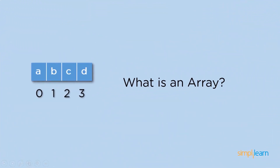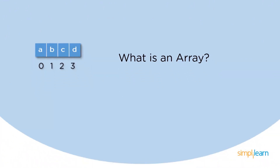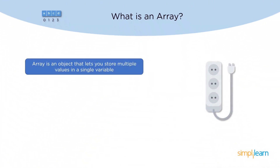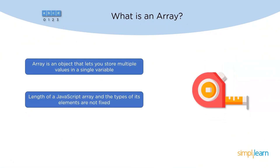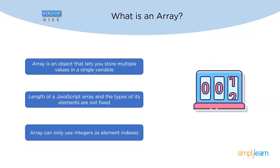So what exactly is an array? An array object lets you store multiple values in a single variable. It stores a fixed-size sequential collection of elements of the same type. An array is used to store a collection of data and it uses only integers as element indices. However, associative arrays can also use string indices.